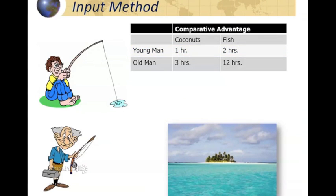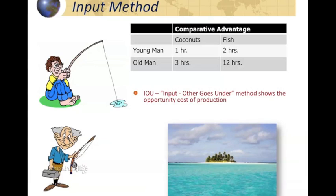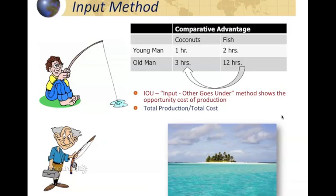For the input method, we use what's called the IOU method — Input Other Under. We flip the division around: instead of total cost over total production, we take total production over total cost. So we take numbers from one column and put them under the numbers from the other column.